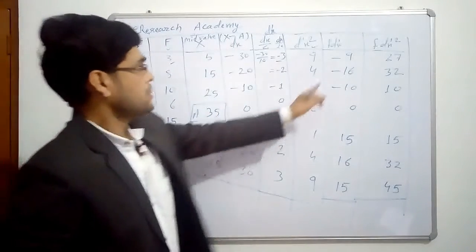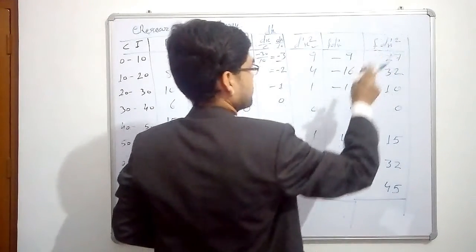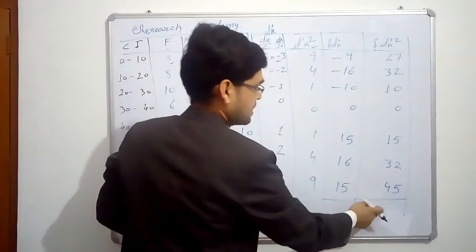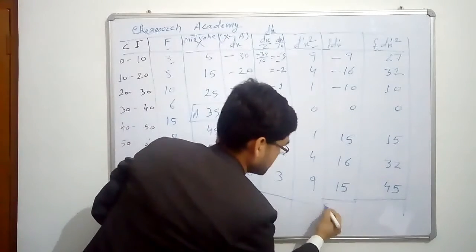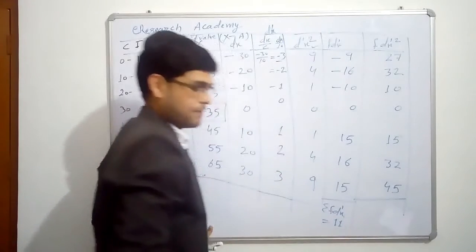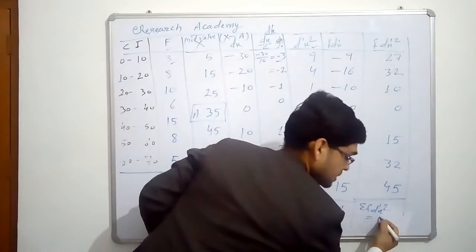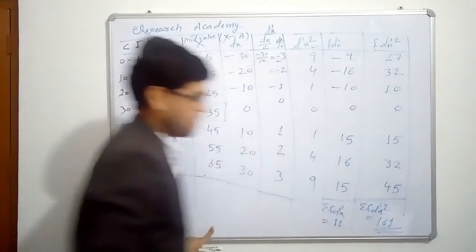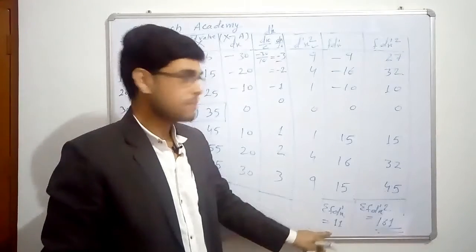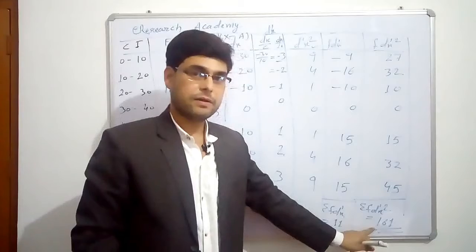Now we need summation of few columns here, not all. We need the summation of f d-x dash square and f d-x dash. So only these two columns we need. The summation of first one becomes sigma f d-x dash equal to 11. And sigma f d-x dash square becomes 161.